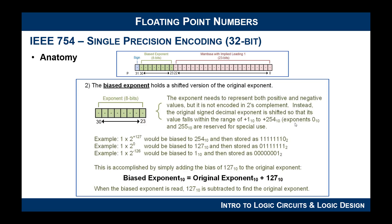The exponent in the single precision encoding of IEEE 754 holds what we call a biased exponent, which is essentially a shifted version of the original exponent. In scientific notation you're going to have both positive and negative exponents — positive means you shifted the radix point to the left, negative means you shifted it to the right. IEEE 754 did not want negative numbers in the exponent because it makes the math easier, so what they did is shift the exponent up so that all values are considered positive.